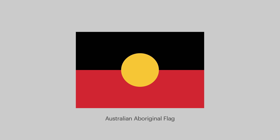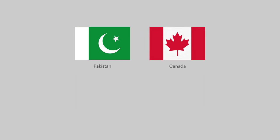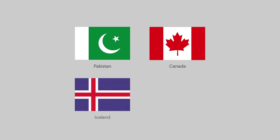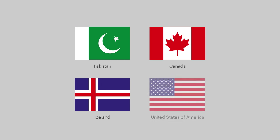In the Australian Aboriginal flag, the colours are symbolic, representing the sun, the earth, and the people. When combining colours, separate light with dark to create contrast. A flag should also work in greyscale. The most successful national flags use two or three colours — more than four can be hard to distinguish.